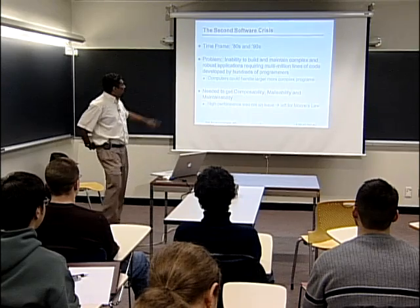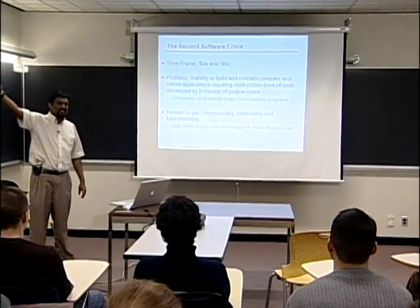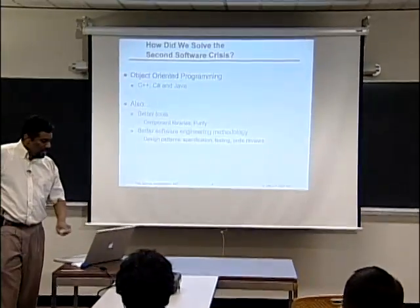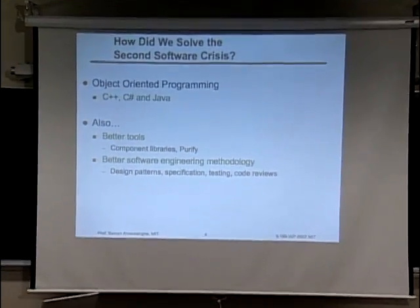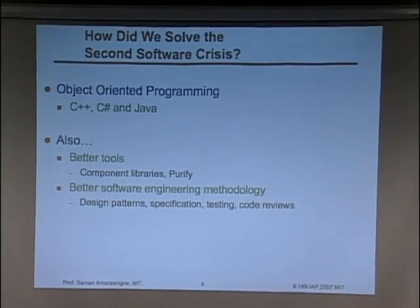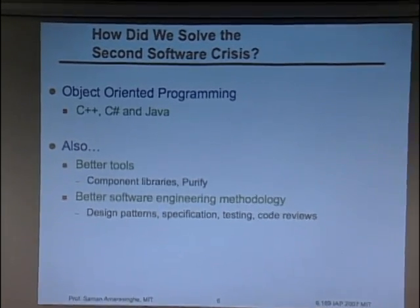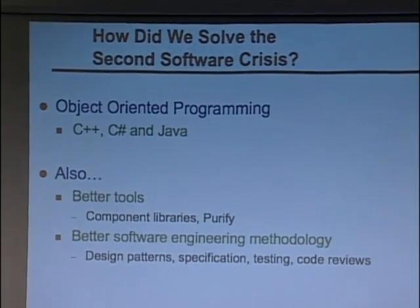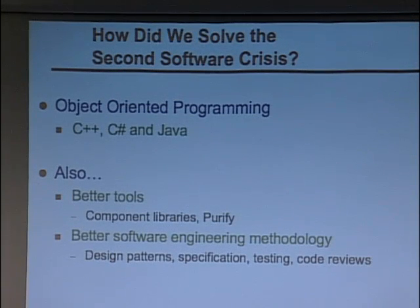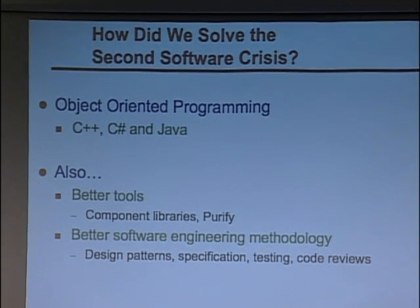Interestingly, we never cared about high performance at that time. The way we solved that crisis — and a lot of people got very famous for doing this — was coming up with things like object-oriented programming languages: C++, C#, and Java. These basically made it possible for hundreds if not thousands of people to develop software together. If you look at new Microsoft products, thousands of people are involved and they still manage to ship. We also developed better tools like component libraries and tools like Purify, and we developed software engineering methodology — making it more of a process than an ad hoc art form.